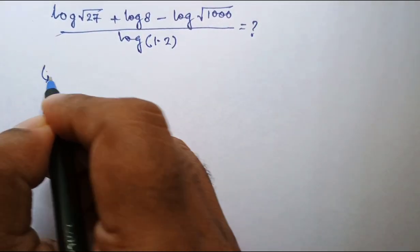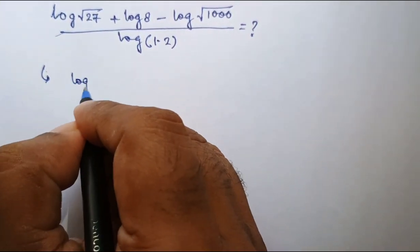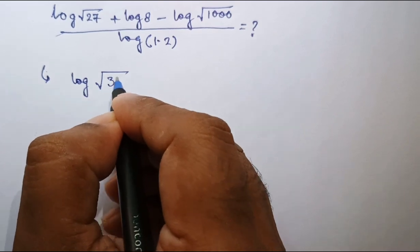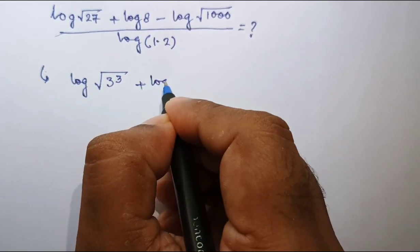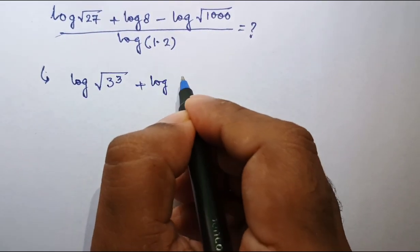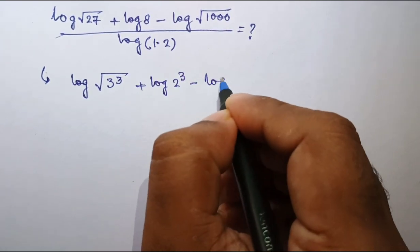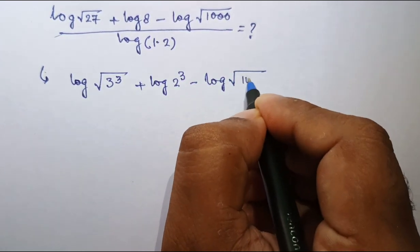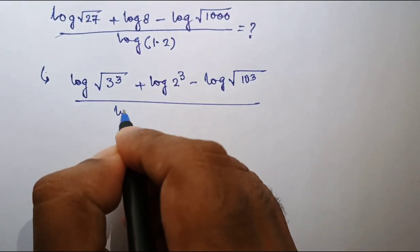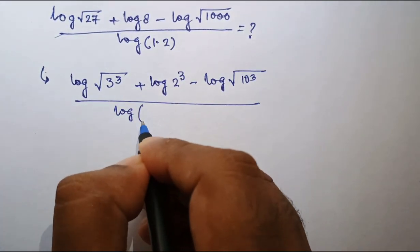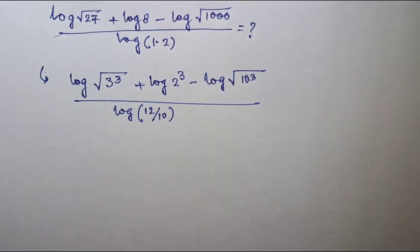To start with this problem, I am writing it as log of square root of 3 cube, because 3 cube is 27. Then log 8 is log of 2 cube, minus log of square root of thousand, which is log of 10 cube, whole divided by log of 12 by 10 — since 1.2 is 12 by 10.